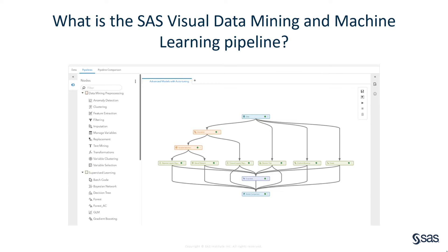While there is a tremendous amount of functionality available at your fingertips through this suite of nodes and the numerous properties within each node, you may be looking to add functionality to your model building process that is not covered within a defined node in the product. How can you extend the pipelines to include this custom code? The SAS Code node, of course.